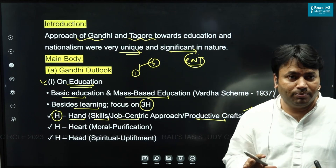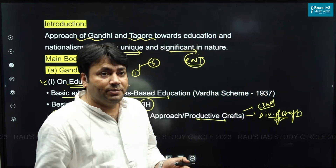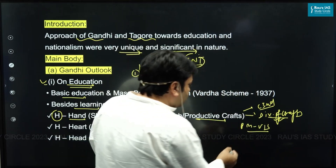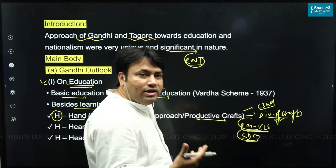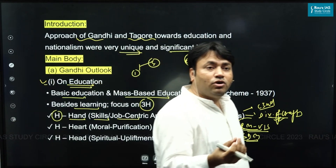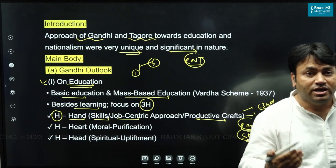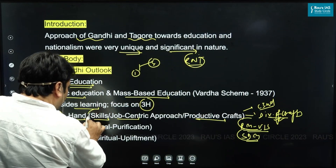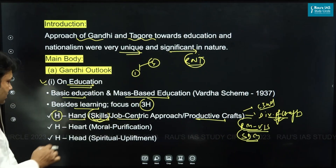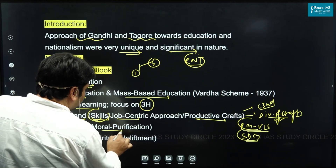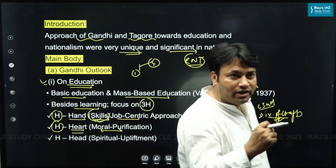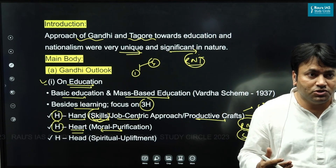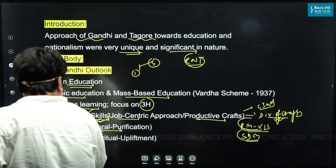Government schemes like PM Vishwakarma Yojana and the Skill Development Mission reflect Gandhi's idea that skill training and official support for crafts are important for national growth. 'Heart' refers to moral purification — the education system must promote ethical behavior among people.